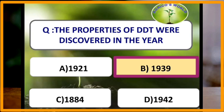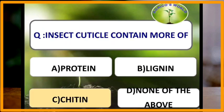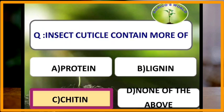It was a life-saving discovery by Paul Müller, for which he was awarded the Nobel Prize. Insect cuticle contains more chitin. Chitin is a nitrogenous polysaccharide and it accounts for 25 to 60 percent of the dry weight of cuticle, and its specific gravity is 1.4.